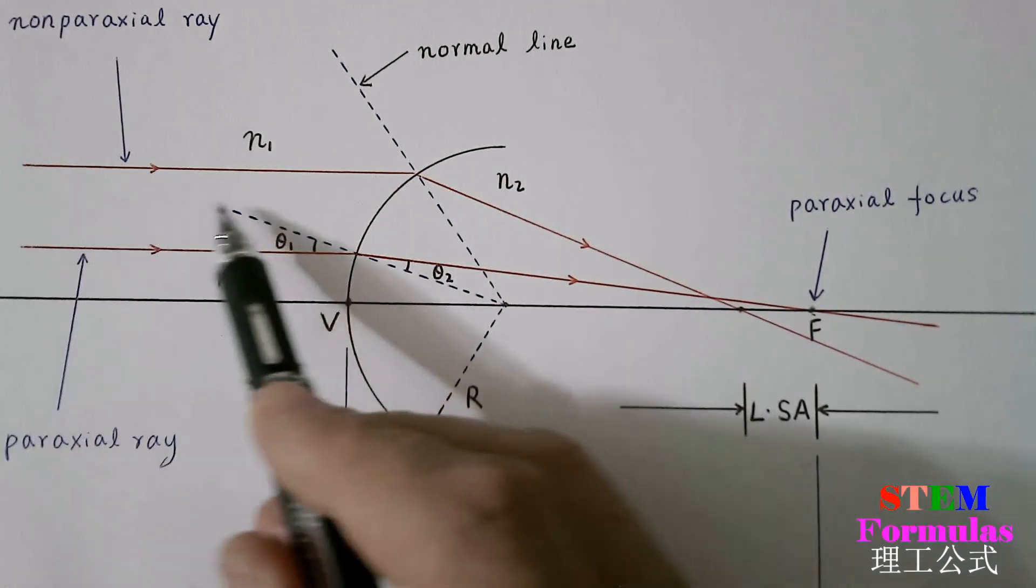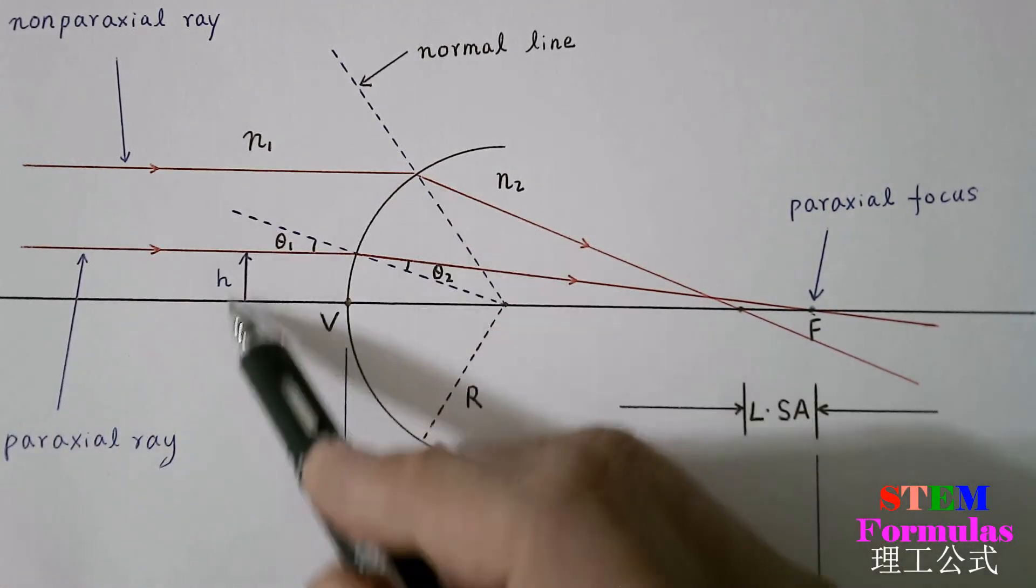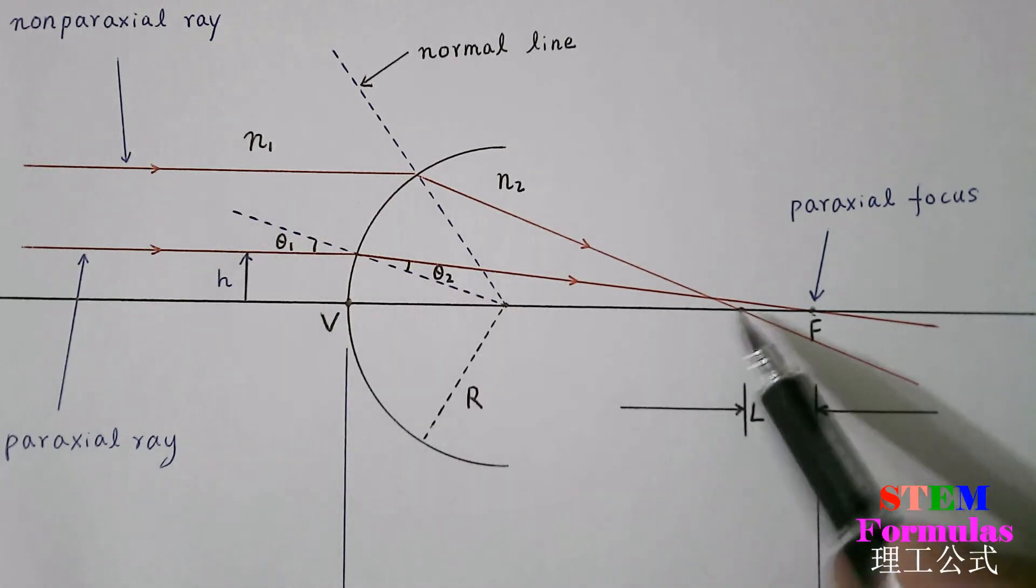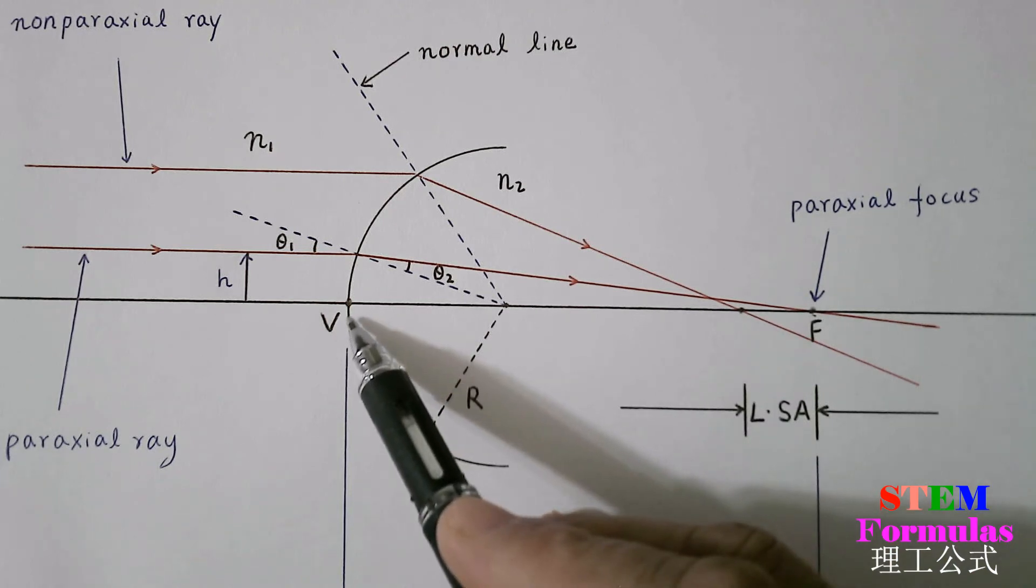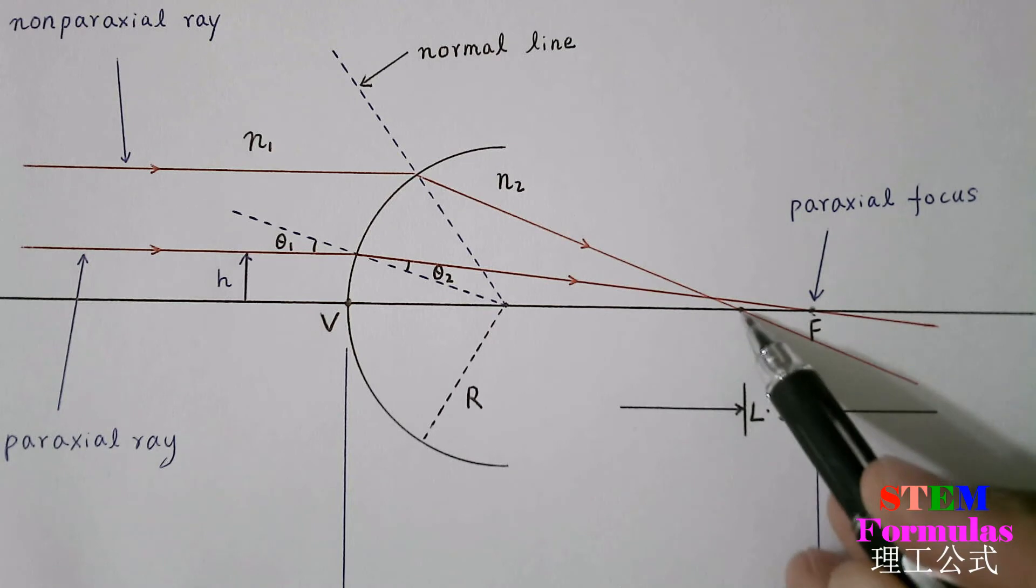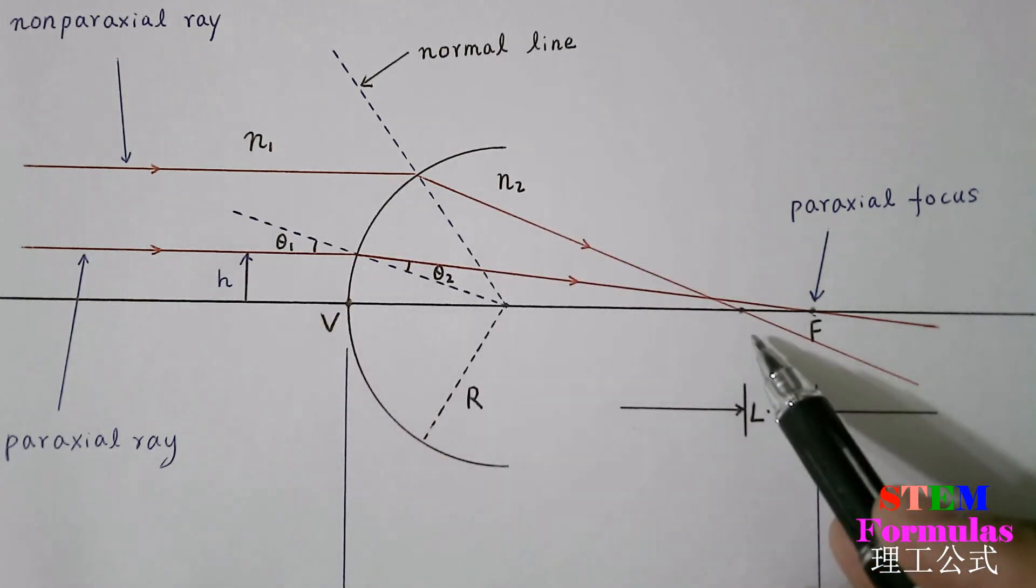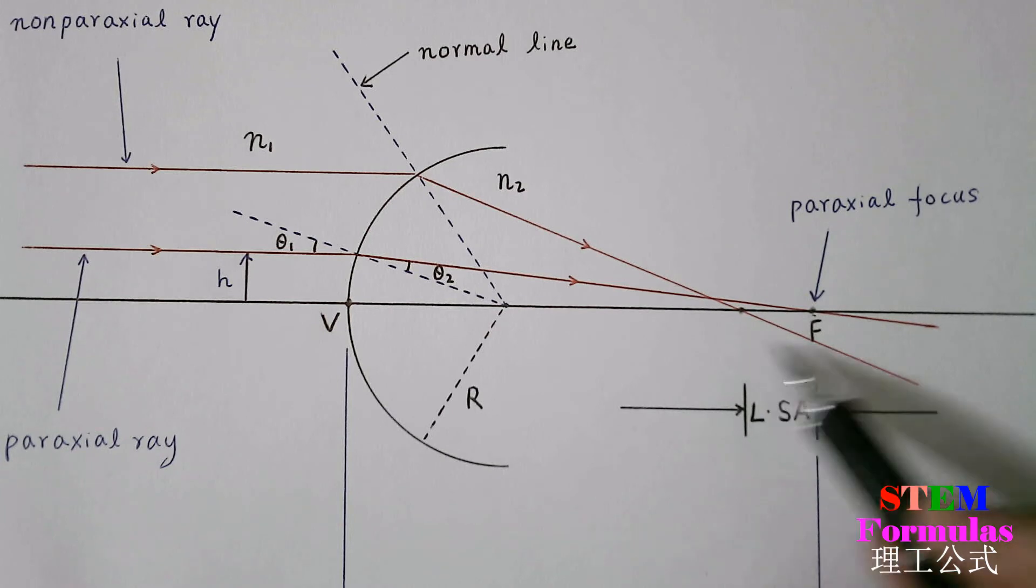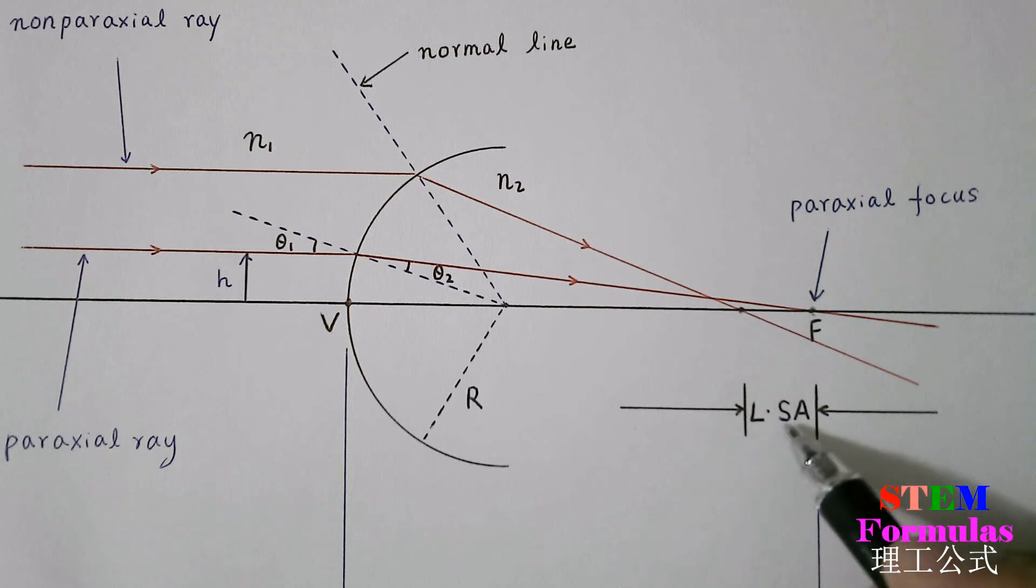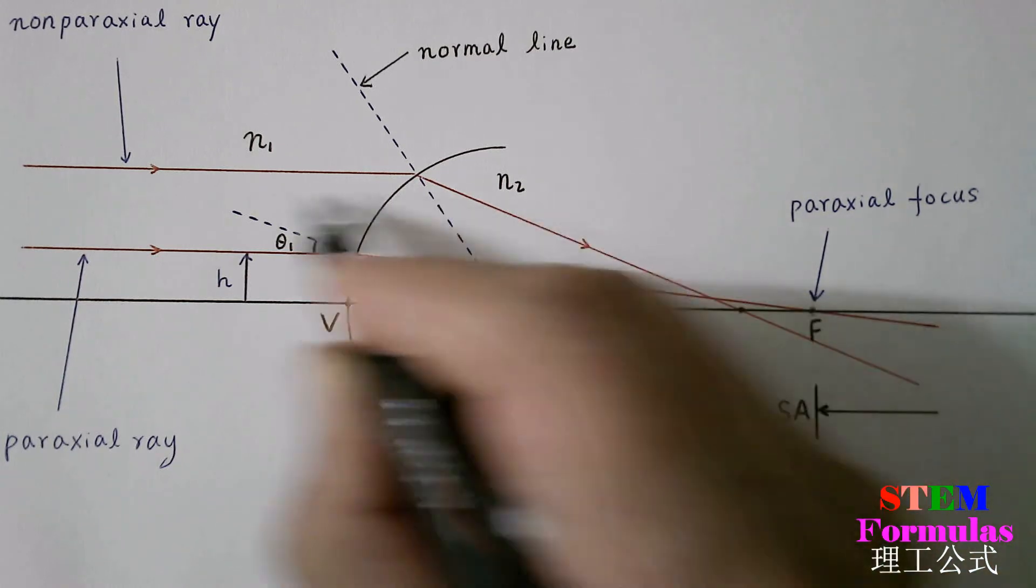Rays striking the surface at greater distance above the axis are focused nearer to the vertex. The distance between axial intersection of a ray and paraxial focus F is known as longitudinal spherical aberration, or LSA, of a light ray.